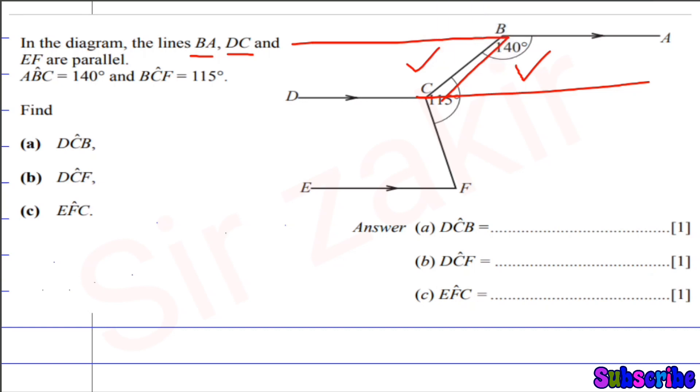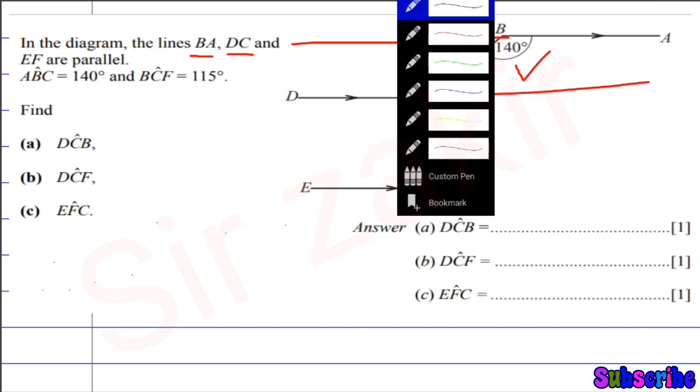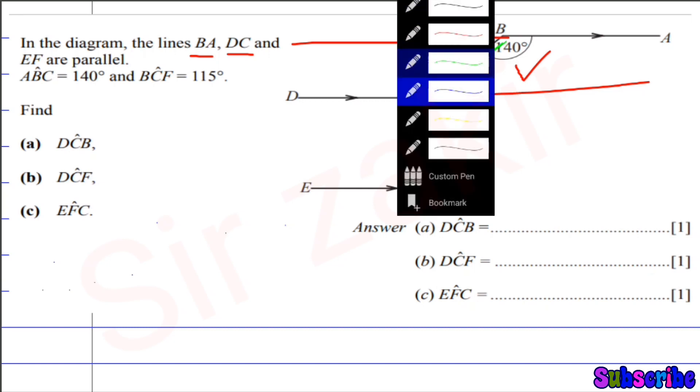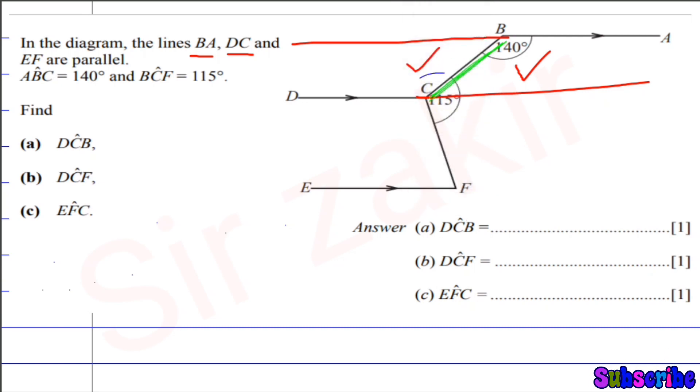When these two are parallel lines, they are intersected by the transverse shown in green color here. This transverse intersects them, so alternate angles shown with the tick are formed. These two are alternate angles; alternate angles are equal.